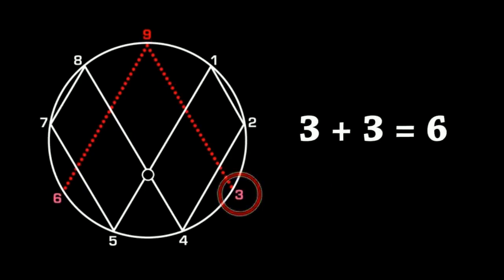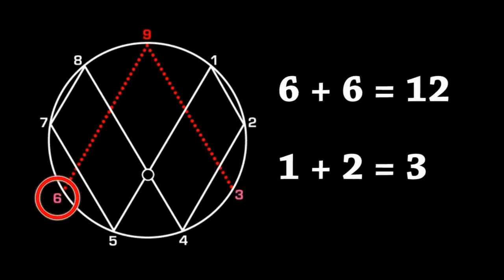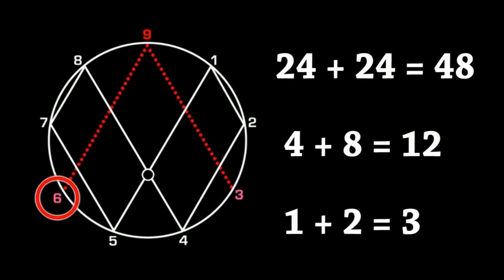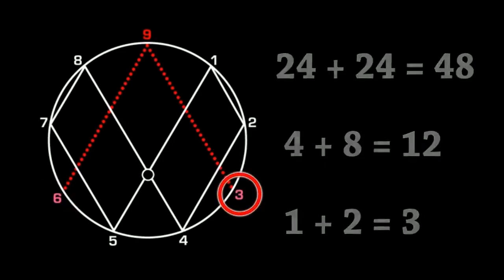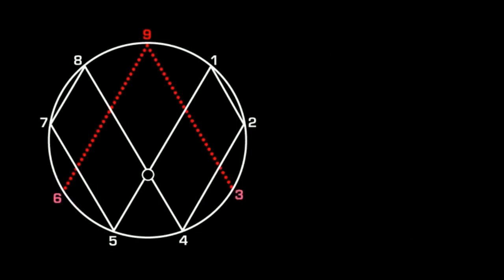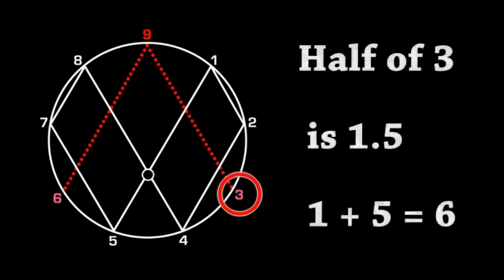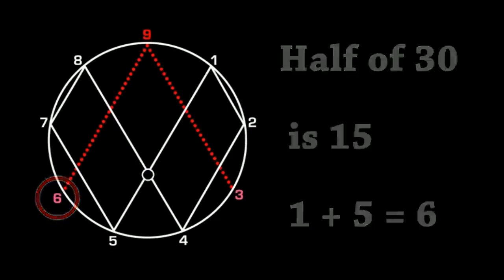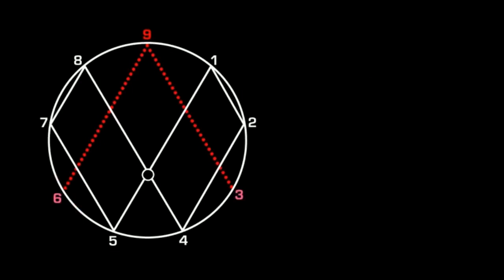When the number three is doubled, we get the number six. When six is doubled, we get 12, and one plus two is three. Twelve doubled becomes 24, and two plus four is six. Twenty-four doubled is 48, and four plus eight is 12, with one plus two bringing us back to three. Forty-eight doubled is 96, and nine plus six is 15, with one plus five giving us six. So no matter how often you double the three and the six or half them, you will find them oscillating back and forth between each other. Half of six is three, half of three is 1.5, and one plus five is six. Any variation will work. So there's a very special relationship between three and six, a back and forth cycle, which none of the other numbers share.